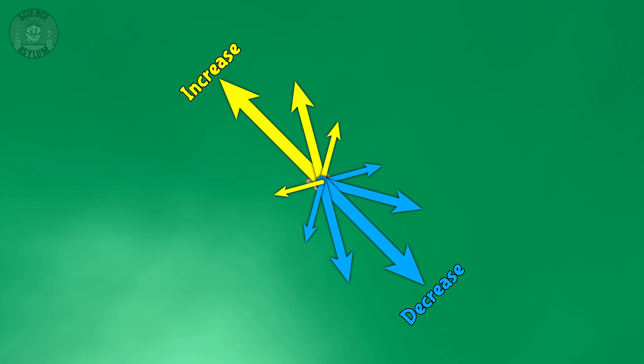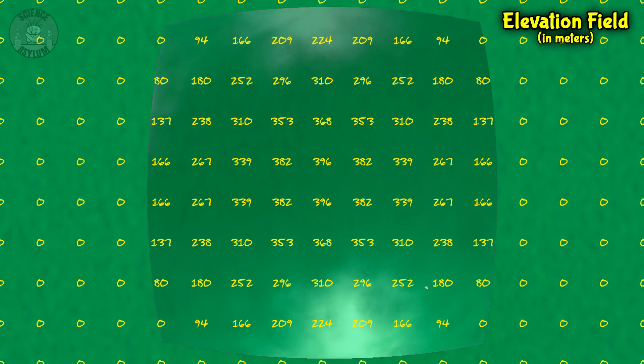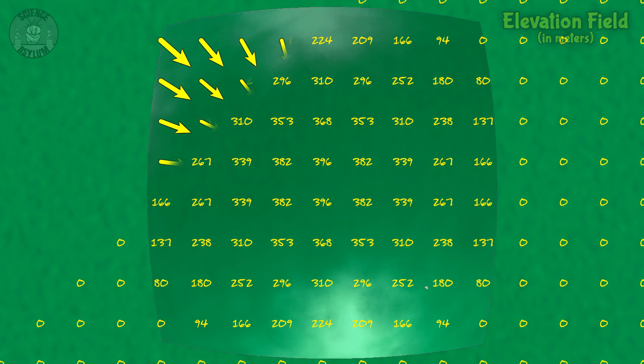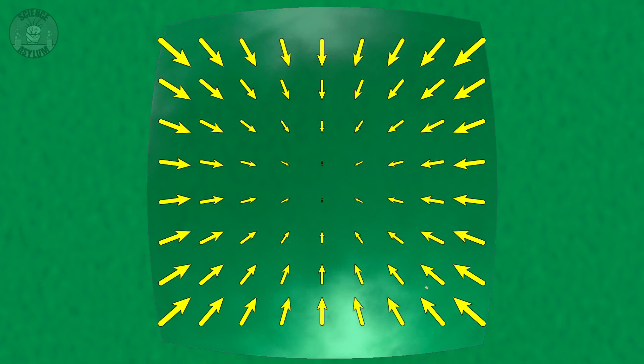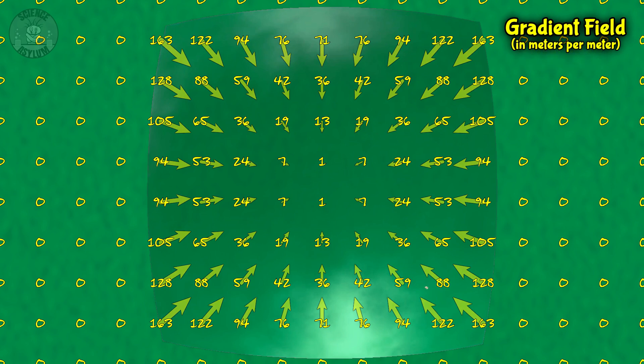Any direction you move on the hill will change that elevation. The direction of the gradient is the direction you can walk that will give you the quickest change in elevation. But this gradient also depends on location, so it's also a field. Just like the elevation is a number assigned to each point in space, the gradient is an arrow assigned to each point in space. The direction of each of those arrows is the direction of greatest increase in elevation, and their size tells us how quickly that increase is happening.